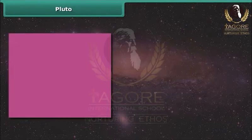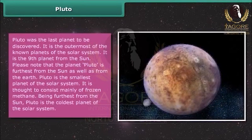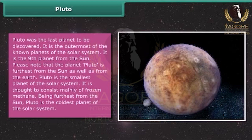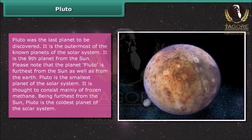Pluto was the last planet to be discovered. It is the outermost of the known planets of the solar system — the ninth planet from the Sun, farthest from both the Sun and the Earth. Pluto is the smallest planet of the solar system. It is thought to consist mainly of frozen methane. Being farthest from the Sun, Pluto is the coldest planet of the solar system.